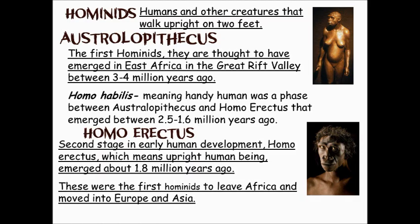The first hominids to leave Africa and move to Europe and Asia were probably Homo erectus. They also used more complex tools — they took that rock, which had been everyone's best buddy, and they tied it onto a stick, giving them a good club. Or they might have even sharpened their rocks. Now we're really getting to be complex.